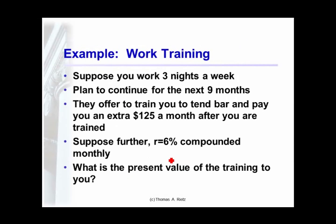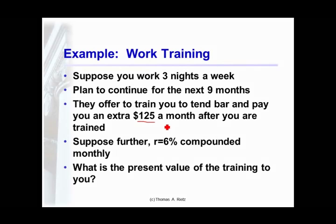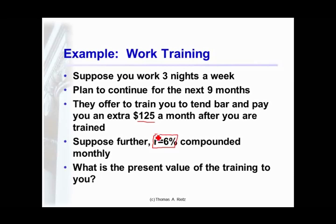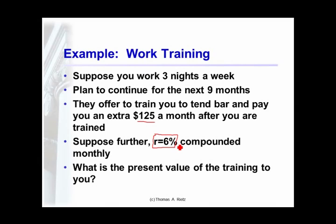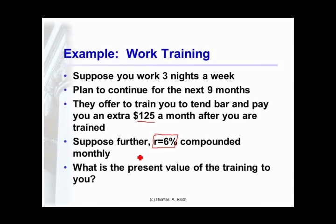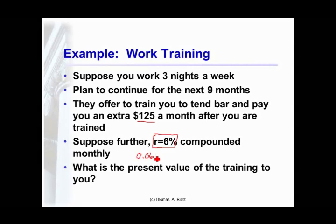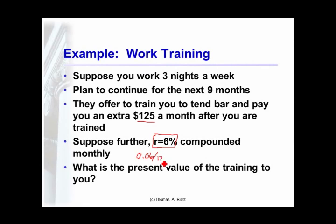For example, suppose that you work part time at a job. You have the option to take some work training that will give you $125 at the end of each of the next 9 months. Now, here's a convention. Interest rates are always quoted annually. If you get an interest rate and it says compounded monthly or weekly or daily, the interest rate quote is always annual. The interest that you actually pay or receive per period is that annual rate divided by the number of periods in a year.